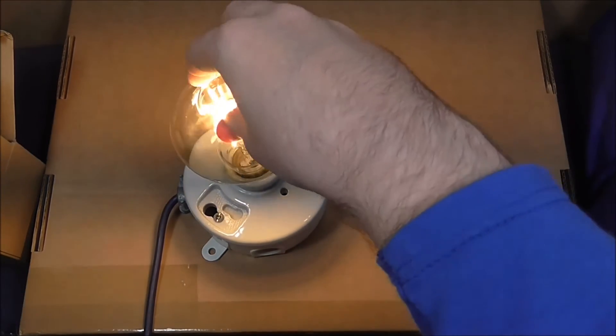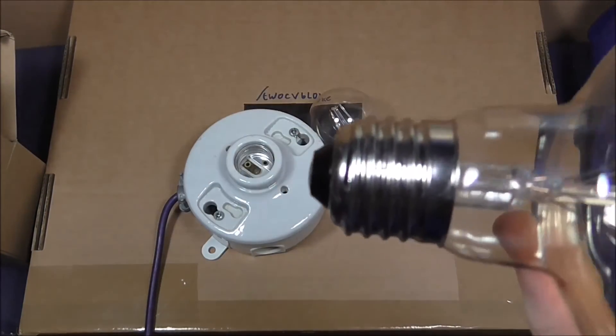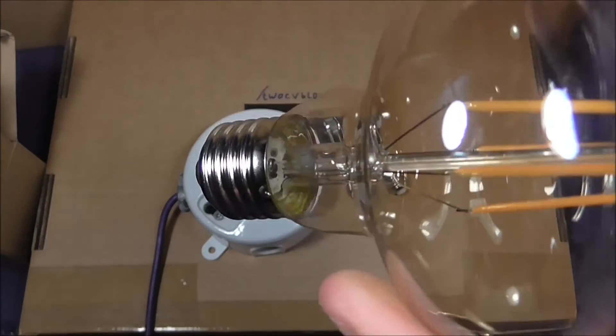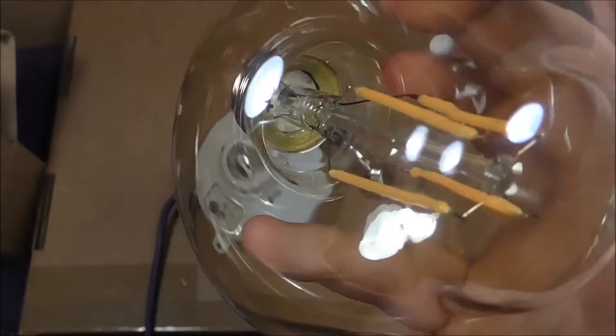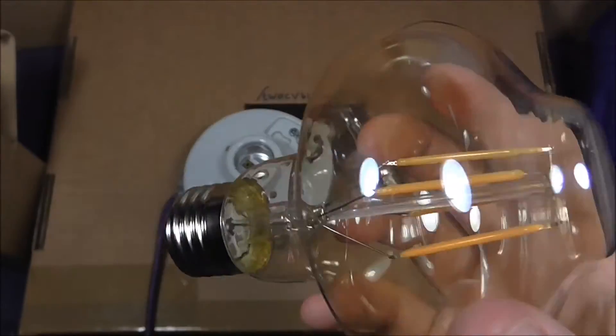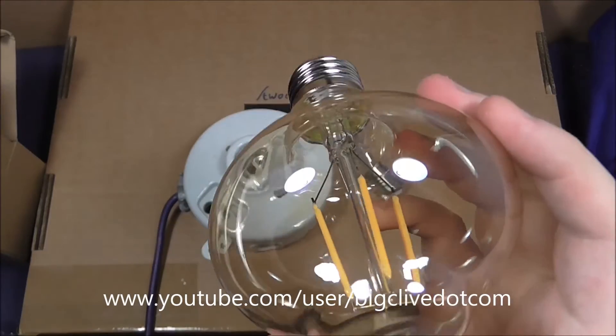So I think it's probably just something like a resistive dropper in there rather than a switch mode supply. You can see that in the base they've actually marked like in Sharpie or something the positive negative terminals. So there's probably not much in that base but unlike BigClive.com I'm not taking this apart.